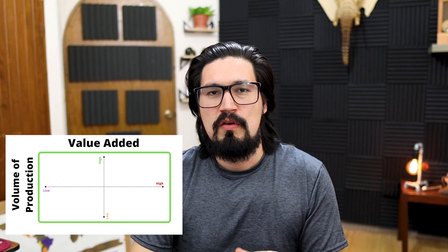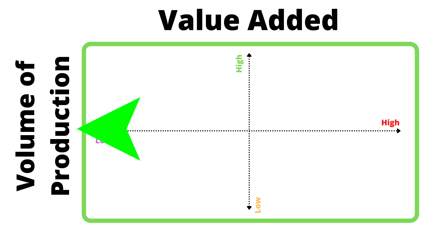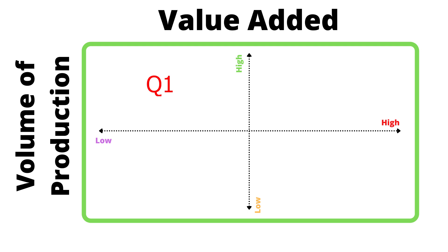I don't want to overwhelm you with so many concepts, so what I want to do first is get to know the Klein Matrix. For those not familiar, the Klein Matrix is a comparison of chemicals in two ways: number one, the amount of production — either low or very high — versus the value added to that final chemical. This gives us four quadrants: very high production and low value, very high production and higher value, low production and low value, and finally very low production but very high value.